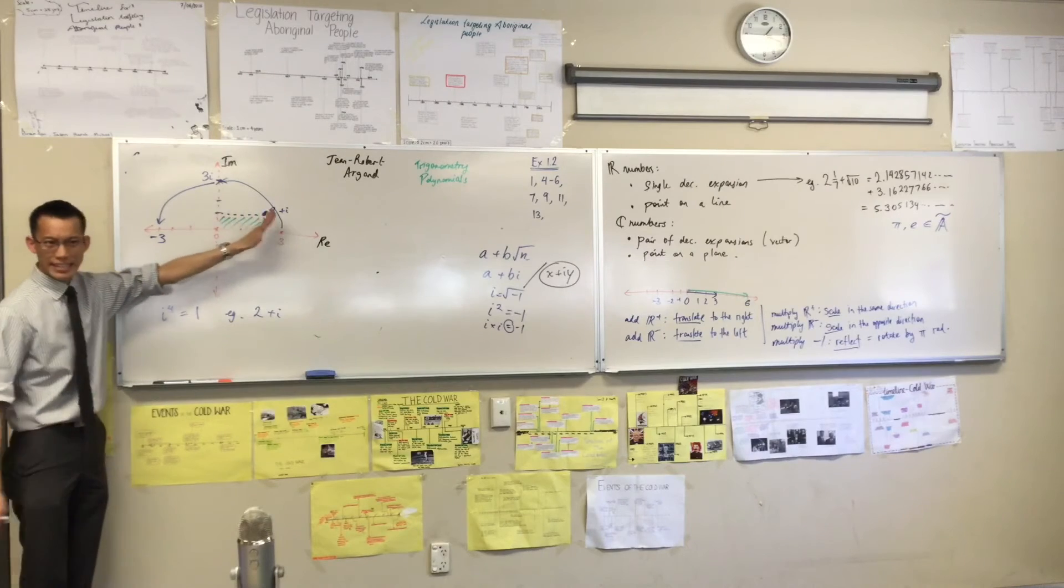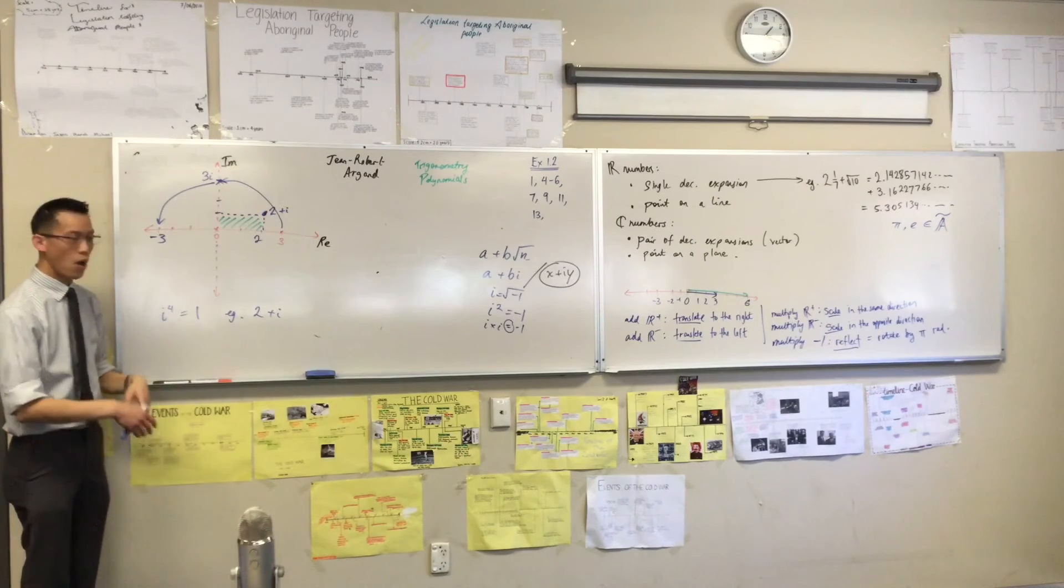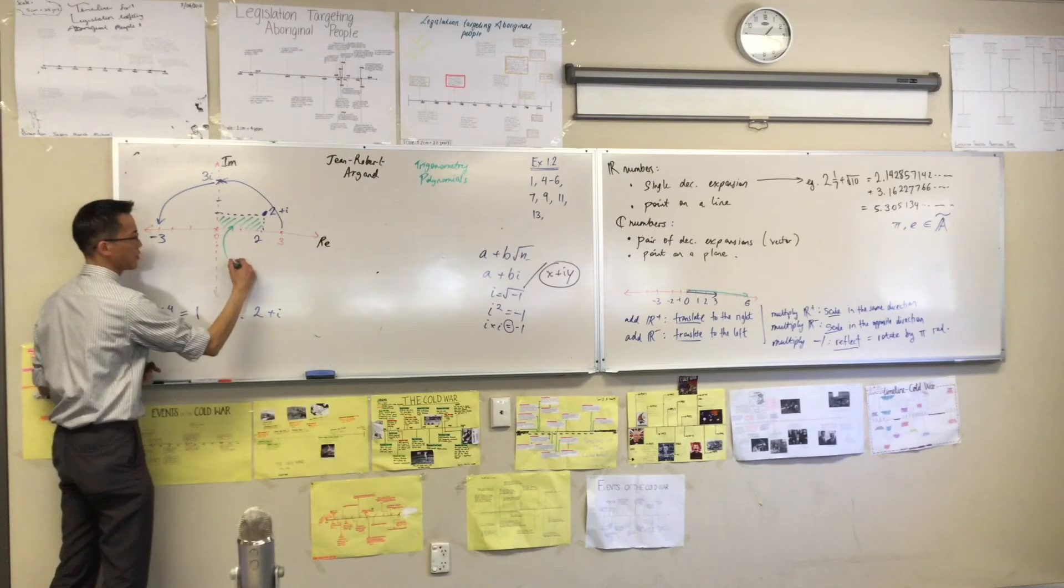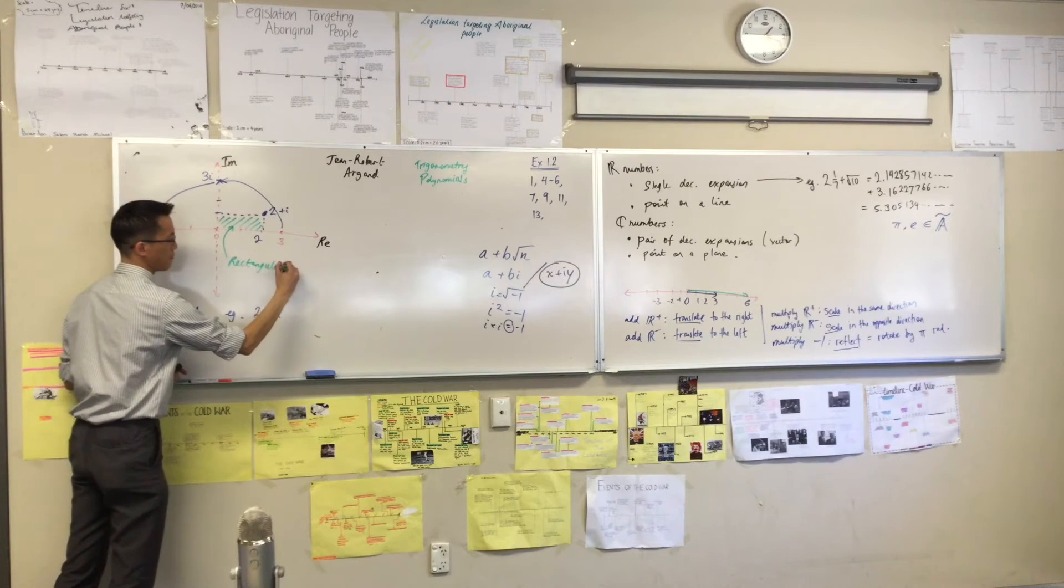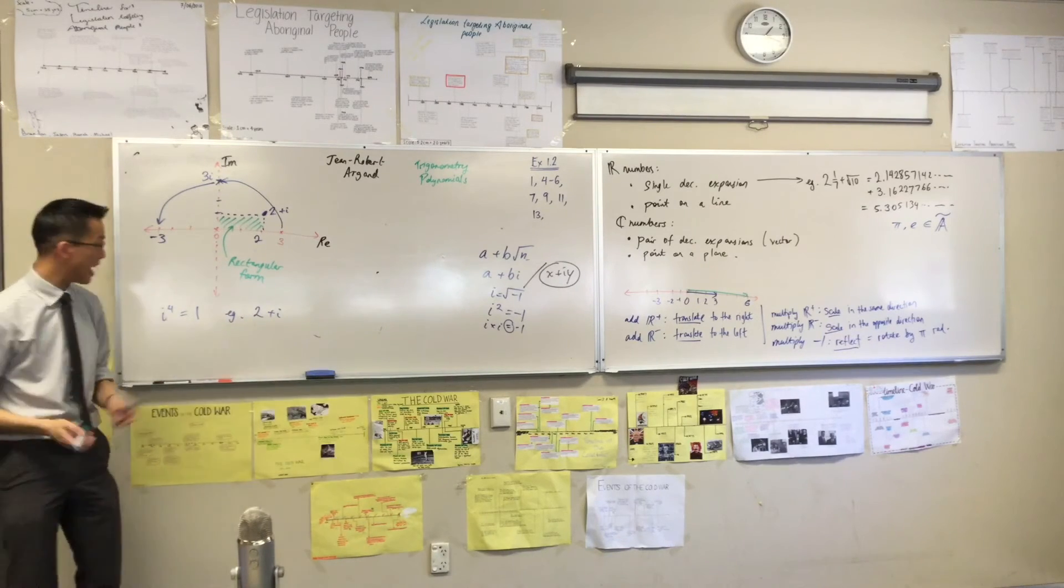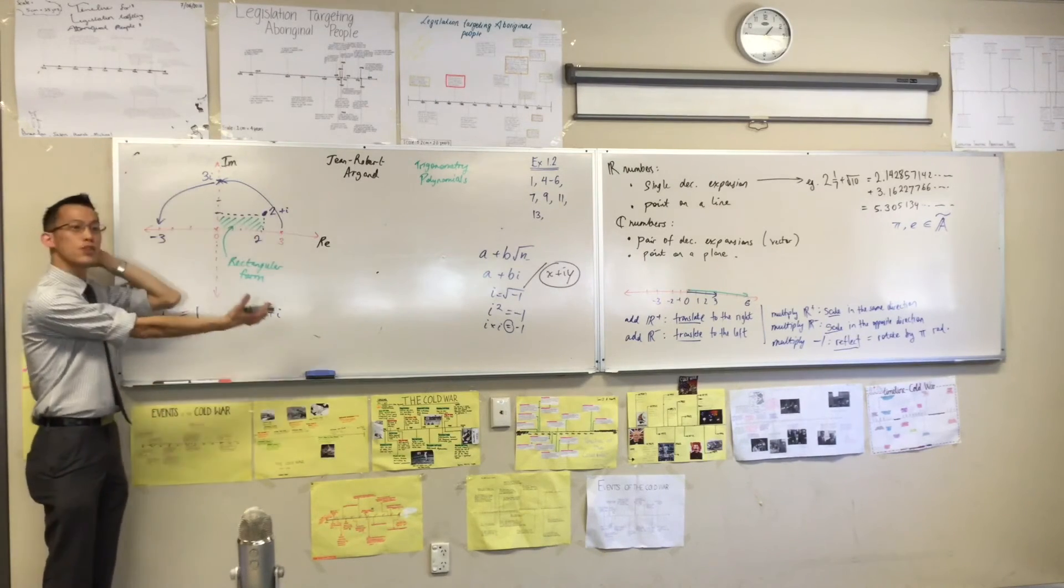Secondly, because it's like a rectangle, we also often call it, this is actually my favorite name, it's my personal preference. We call it rectangular form. Because if you combine any a and b you like, that will draw out for you a rectangle.